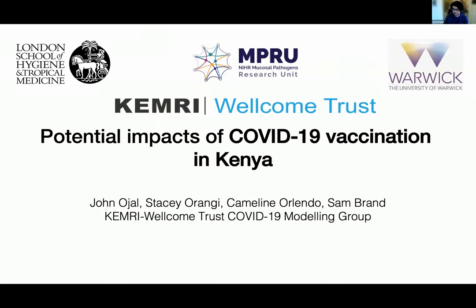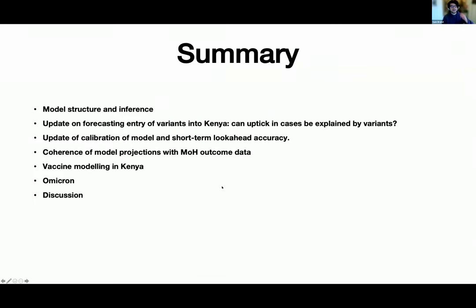I'll also cover some critical features around the age structure and the speed of the vaccine rollout. Finally, I've been pretty much 100% on Omicron — we kind of anticipated it, but that doesn't mean it hasn't been a lot of work trying to work out what we think will happen in Kenya. I'll share some early findings about where vaccines are already helping.